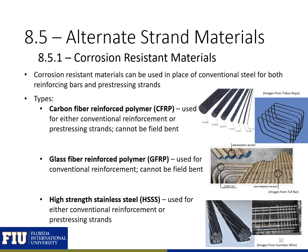Because conventional pre-stressing reinforcement is susceptible to corrosion, there is a recent push for using corrosion-resistant materials in place of conventional steel, both for reinforcing bars and pre-stressing strands. Two types shown here are carbon fiber reinforced polymers (CFRP), including CFRP strands and non-pre-stressed CFRP reinforcement; and glass fiber reinforced polymers, which can only be used for conventional reinforcement and cannot be field-bent. Note that CFRP also cannot be field-bent. High-strength stainless steel (HSS) can be used for either conventional reinforcement or pre-stressing strands.